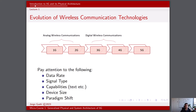The device size got smaller and more feature-rich smartphones with color screens compared to 2G and 1G. 3G brought faster data rates and enabled mobile internet access, leading to the widespread adoption of smartphones and mobile data services.